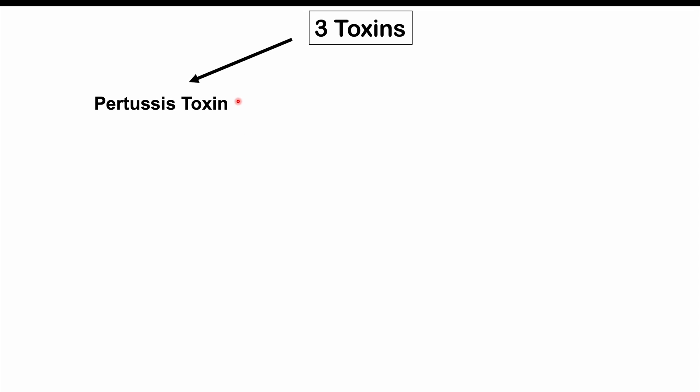The pathophysiology of this bacteria involves toxins it produces. There are three important toxins to know. The first is the pertussis toxin, which disables G proteins — more specifically, it disables the Gi class of G proteins.